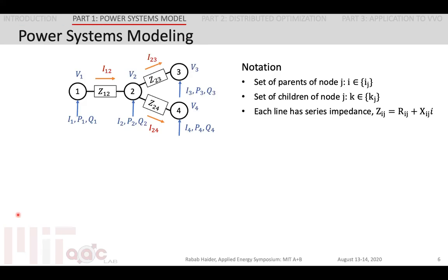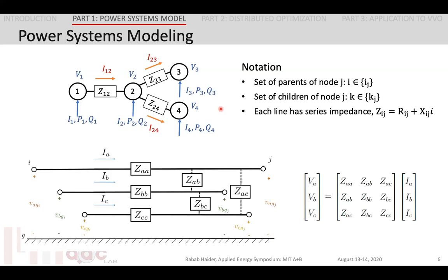We can begin by modeling the distribution grid. We take a current injection approach whereby the power injected P_j and Q_j at every node J is modeled by the current at that node, I_j. The rest of the model is characterized by the nodal voltage V_j, and then the current in the branch between nodes I and J, I_ij. We consider both radial and mesh topologies, and so a node may have a set of parent nodes, which for node three is node two, or a set of child nodes, which for node two is nodes three and four in this diagram. Finally, we modeled the line characteristics using the three-phase impedance matrix, which consists of the resistance and the reactance components of the line.